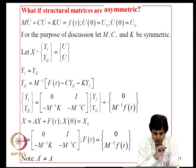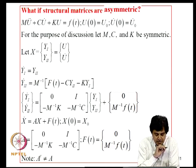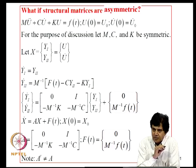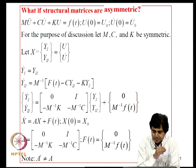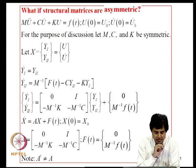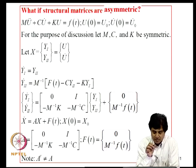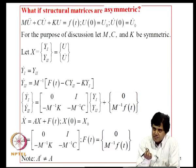Before leaving this topic, we consider one more mathematical complexity: what happens if structural matrices are asymmetric. Even when dealing with non-proportional damping we kept all matrices symmetric, but there may be physical problems — for example gyroscopic systems — where structural matrices are inherently asymmetric.